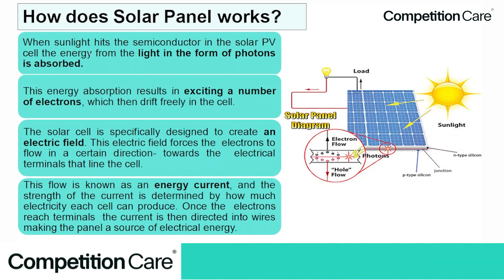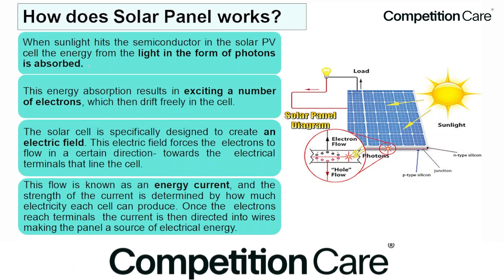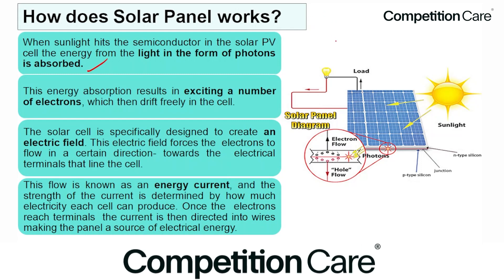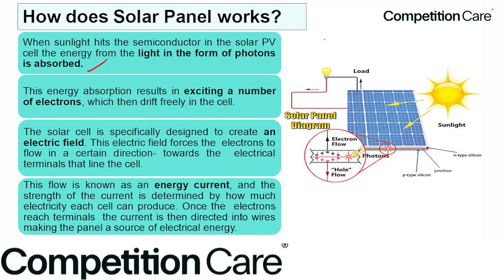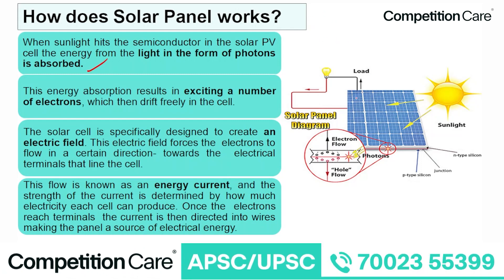When sunlight hits the semiconductor in the solar PV cells, the energy from the light in the form of photons is absorbed. The solar panel uses a grid-like silicon structure in a sandwich-like arrangement — an N-type silicon layer on top and a P-type silicon layer below.